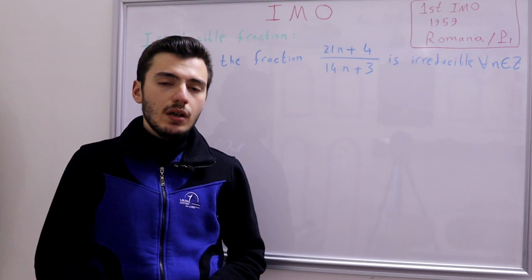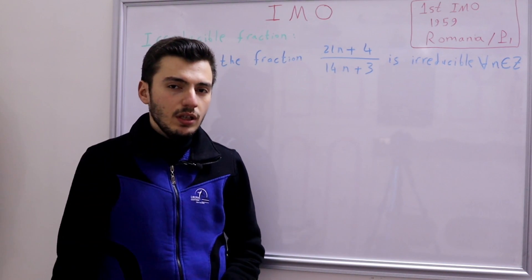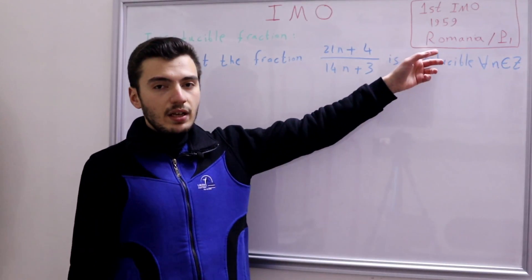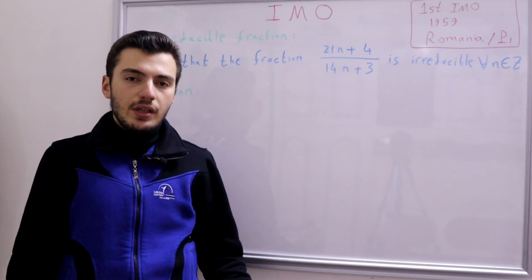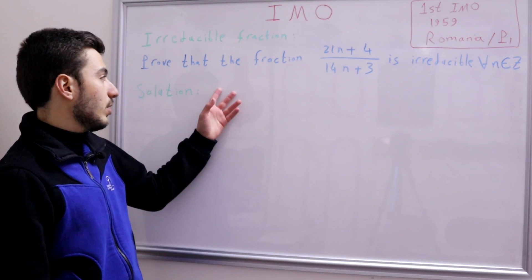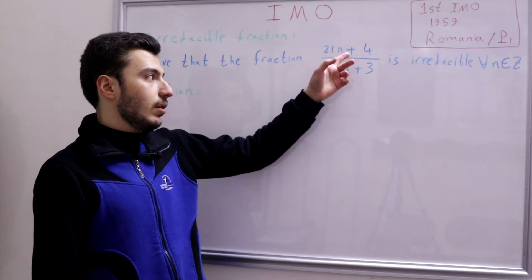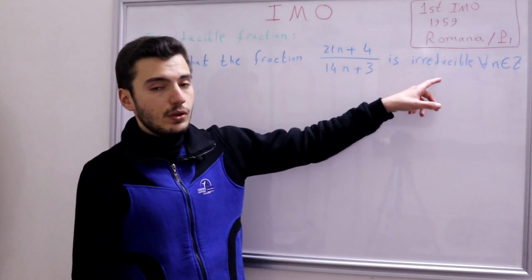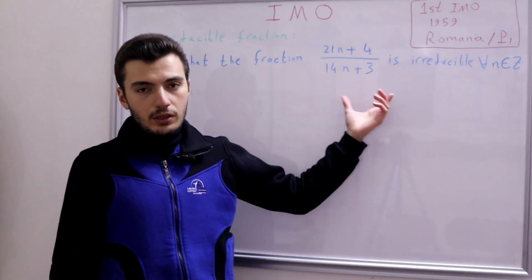We'll start with the first IMO ever, which was held in 1959 in Romania, and we'll start with the first problem ever. In this problem we are asked to prove that the fraction (21n + 4) divided by (14n + 3) is irreducible.